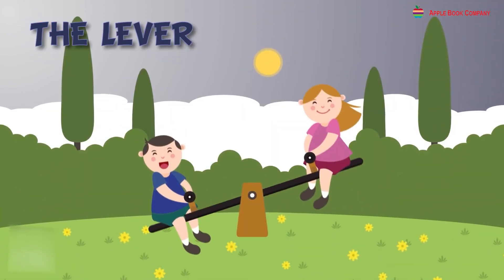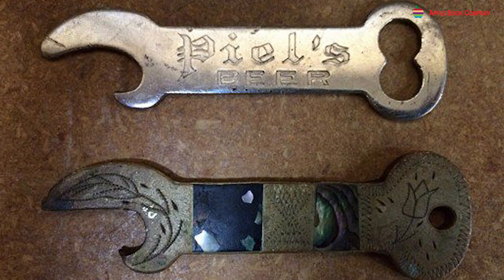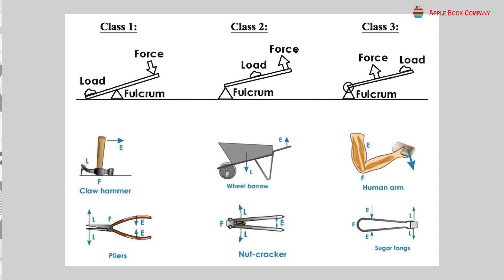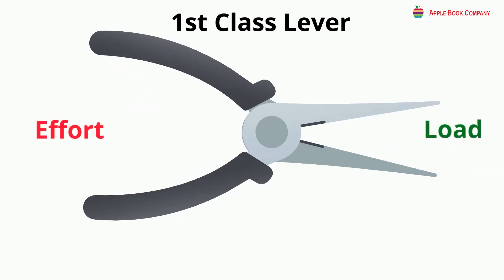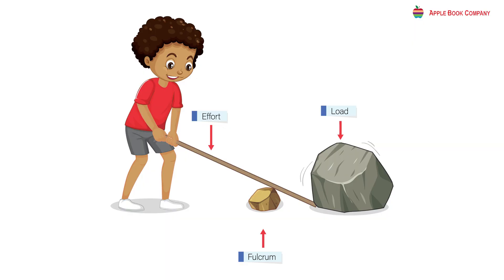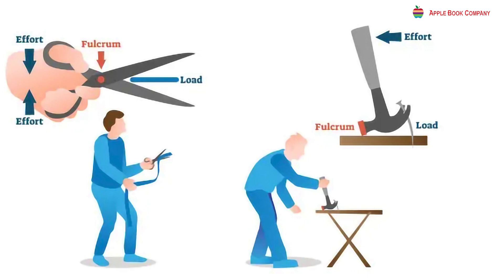We can see levers all around us. For example, door handles, bottle openers, and crowbars are examples of levers. There are three types of levers depending on the position of the fulcrum, load, and effort. First class lever: when the fulcrum is between the load and the effort, it is called a first class lever. A boy using a pole to move a large rock is one example — the rock is the load, the small stone where the lever rests is the fulcrum, and the other end where force is applied is the effort. Scissors and a claw hammer are other examples.